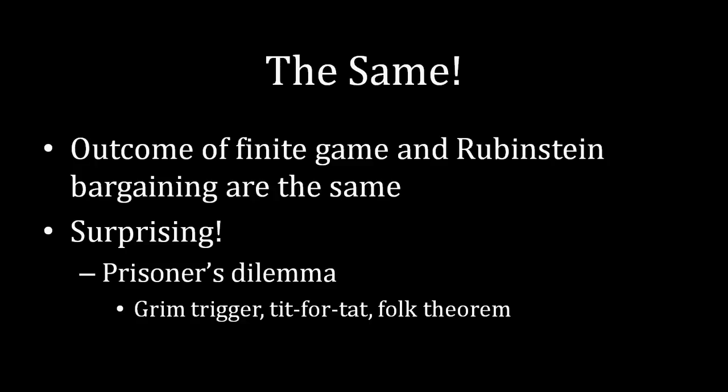This is very much different from what we saw in the bargaining game, where the alternating offers game with a finite number of periods and with an infinite number of periods are exactly identical. As it turns out, this is very rare to see in game theory. We usually think of infinite horizon games as having a whole bunch of different possible outcomes — but not here. In the Rubenstein game, it matches identically to what happens when we extend the number of periods from a finite game to an arbitrarily large number. That is why this is an interesting result, and it's also reassuring to know the Rubenstein game is in fact identical to the finite game.